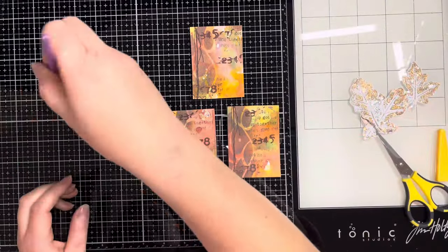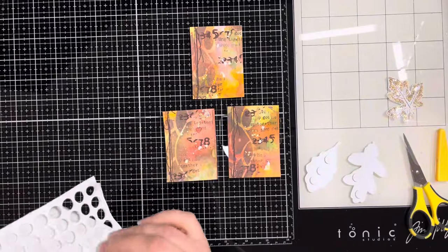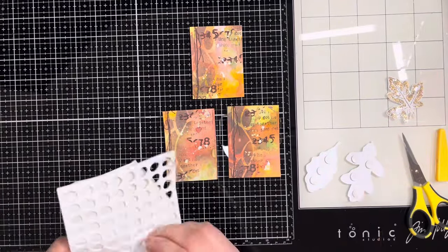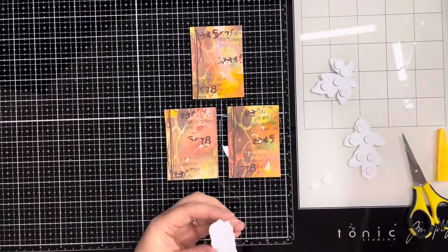Once I've added the splatters I can pop the ATCs aside to dry. While they're drying we can add some foam pads to the back of the leaves so they can be popped up on the front of the cards when they're dry.